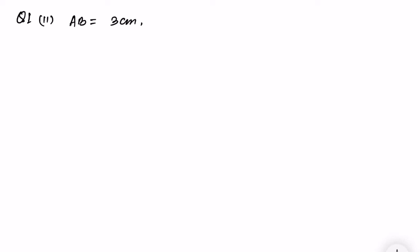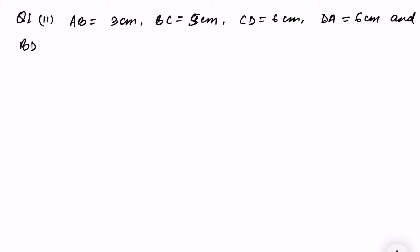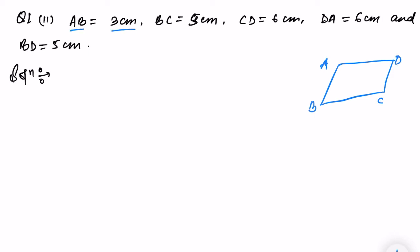We are doing exercise 2.2, question number one, roman number two. Given: AB is equal to 3 centimeter, BC is equal to 5 centimeter, CD is equal to 6 centimeter, DA is equal to 6 centimeter, and BD is equal to 5 centimeter. We need to find the area of this quadrilateral. Let me draw a rough diagram of ABCD.